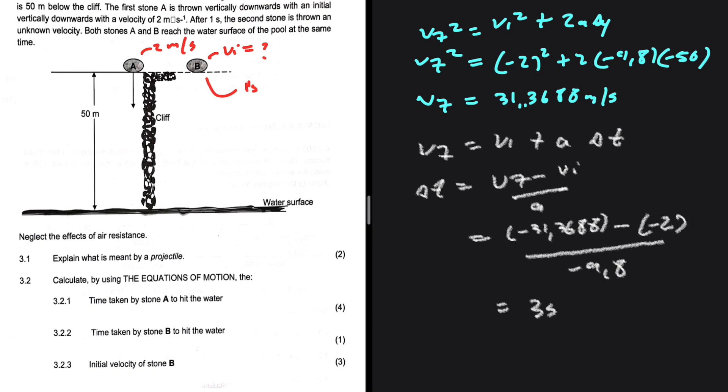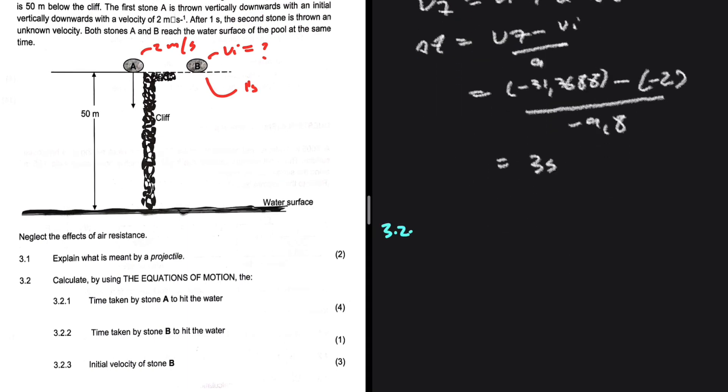The question that follows, 3.2.2, we're supposed to calculate the time taken by stone B to hit the water. This is for one mark. Just to remind you, stone A and stone B strike the ground at the same time, but stone B is projected one second later. So the time for stone B = time for stone A - 1 = 3 - 1 = 2 seconds.